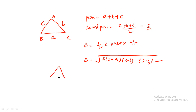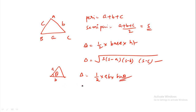When two sides and the included angle are known, the area formula is: area equals 1/2 times ab times sin theta, where theta is the included angle.